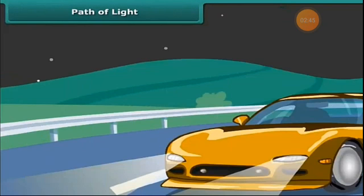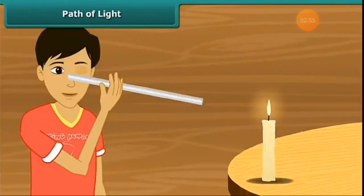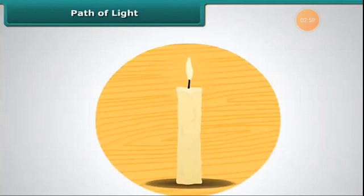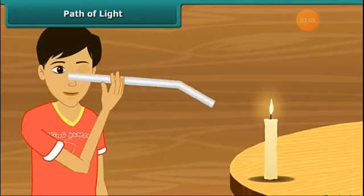Let's try an activity to find out the path of light. Take a lighted candle and a straight pipe. Now look at the lighted candle through the straight pipe. You can easily see the candle through that pipe. Now take a bent pipe and look at the candle through it. Are you able to see the candle's flame through it? Probably not. So now you know that light travels along a straight line.